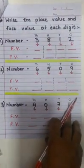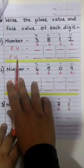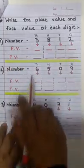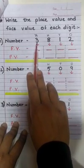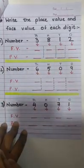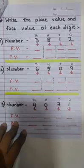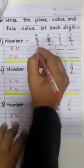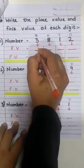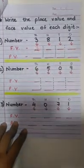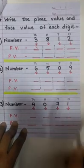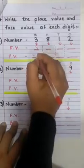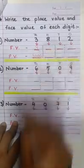We have to write the face value as well as the place value of the given number. The first number is 3812. The face value of 3 will be, come on, try, exactly the digit itself, which means 3. The place value of 3 will become 3000 because it is under 1000s column. Right?